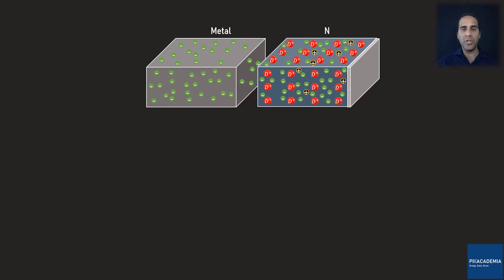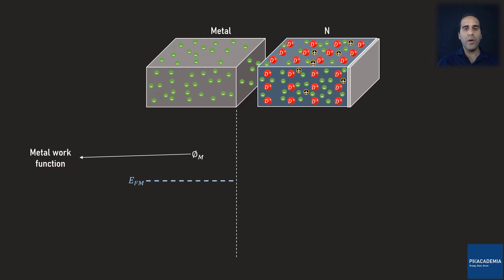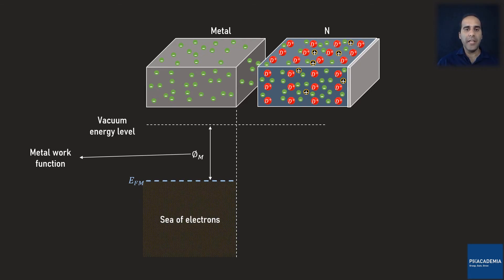Let's start off from the metal. In the energy band diagram, a metal is characterized by its Fermi level, E sub fm, and the metal work function which is shown by phi sub m. Phi sub m is the energy difference between E fm and the vacuum energy level. Under the Fermi level, there is a sea of free electrons. In general, the work function is the minimum thermodynamic work or energy needed to remove an electron from a solid to a point in the vacuum immediately outside the solid's surface.